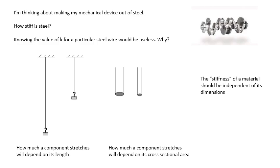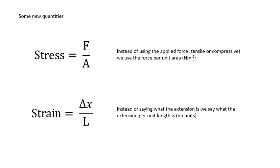It's a bit like saying the mass of something versus the density of a material. So here are a few quantities to start with. Instead of using the force acting on the object, we calculate the stress — the stress that this force produces. It could be tensile or compressive. So instead of using the applied force, we use the force per unit area, dividing by the cross-sectional area. Stress is force over area, so its units are newtons per metre squared, or Pascal.